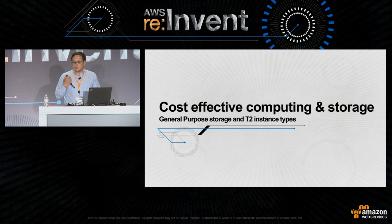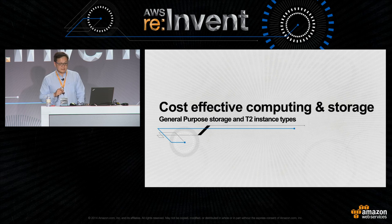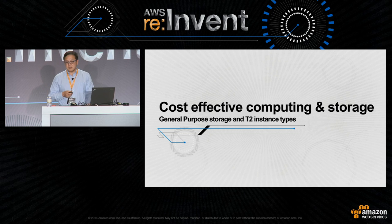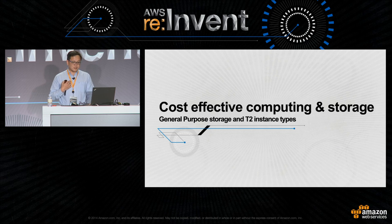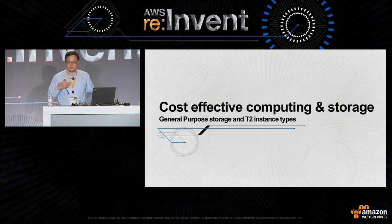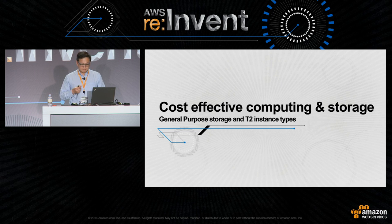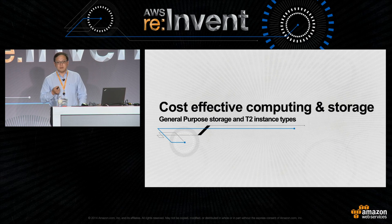Now let's look at some new storage and computing types that will be more cost-effective. Some workloads are, by nature, spiky or bursty — meaning short periods of high I/O and CPU utilization, but low most of the time. To help customers save money, AWS has introduced a new storage type called general-purpose storage, or GP2, and a new instance type called T2.